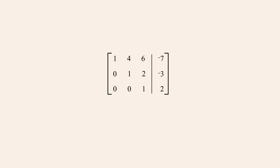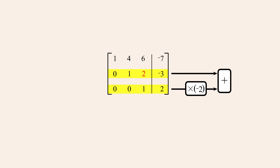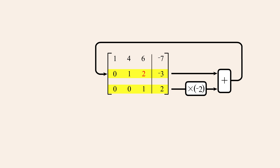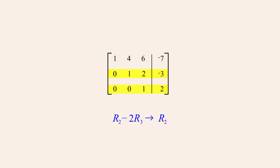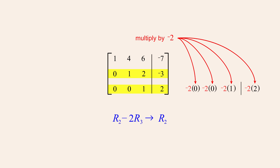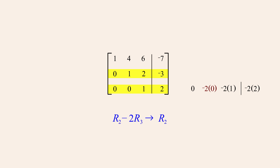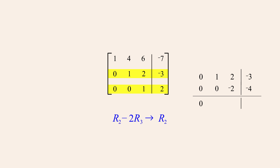We start with the entry directly above the 1. This entry can be zeroed by using a pivot operation to add negative 2 times row 3 to row 2, replacing row 2. We notate this operation by writing R₂ minus 2 times R₃, followed by an arrow and R₂. Multiplying row 3 by negative 2 and adding that multiple of row 3 to row 2, we replace row 2 with the result.